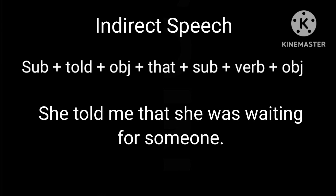She told me that she was waiting for someone. Here, she is the subject, then told, then me as the object, then that, then she, then was — not is, because it's past tense. Always remember: for indirect speech, we will use past tense. After was, waiting — waiting is the verb. Then for someone, where someone is the object.